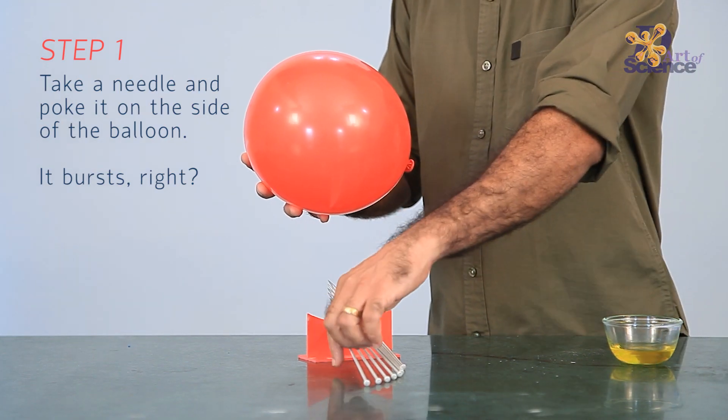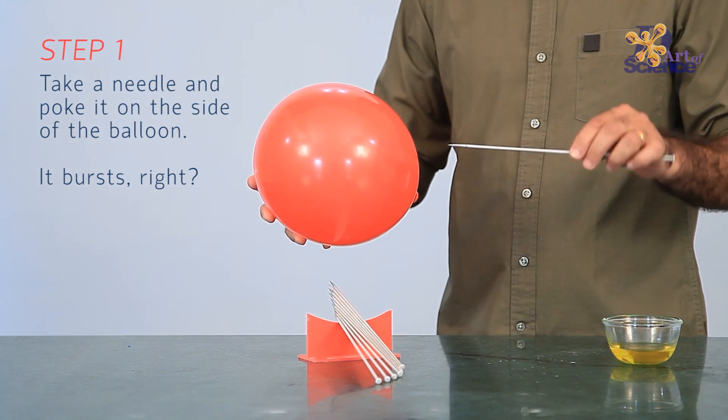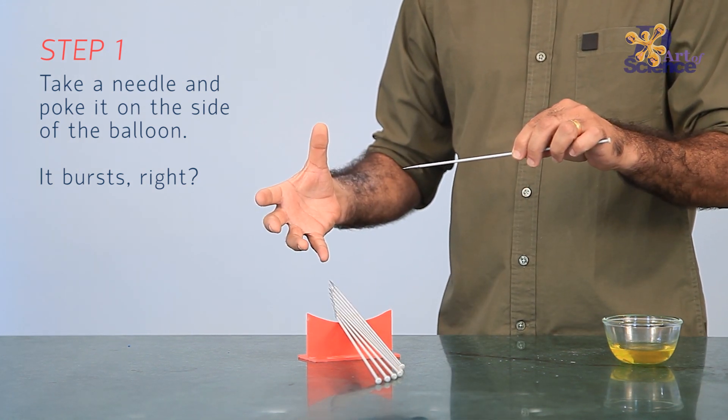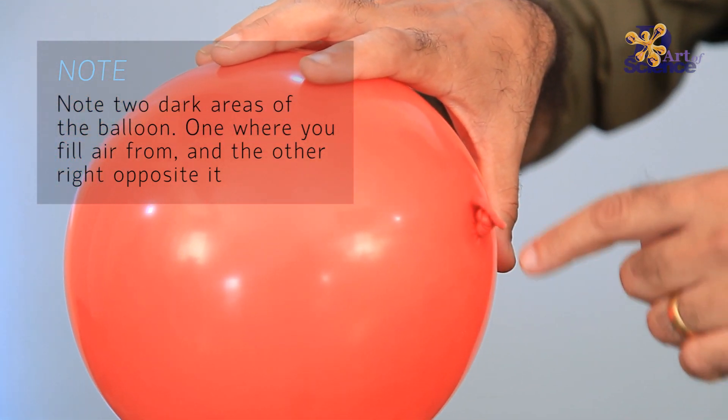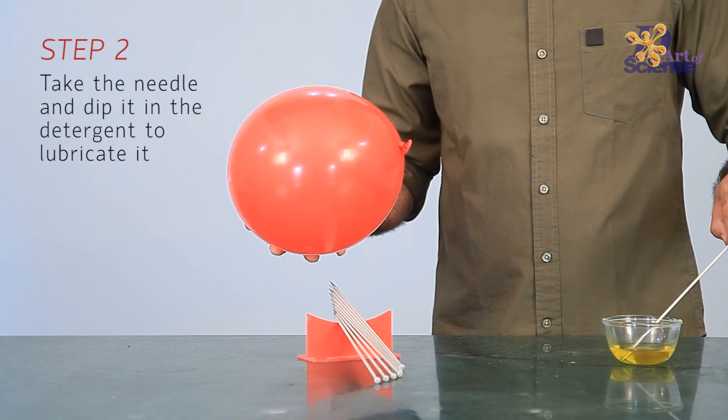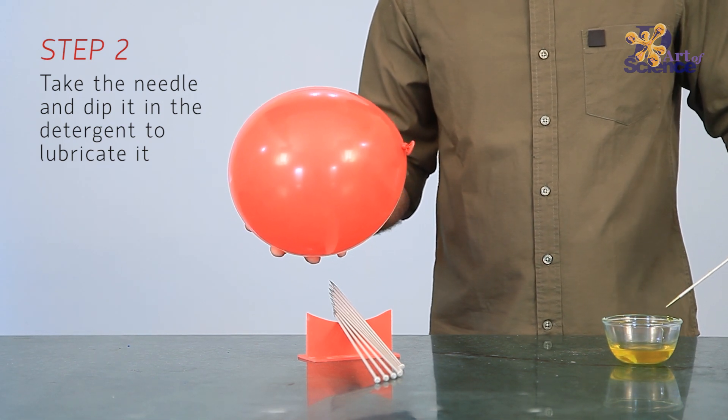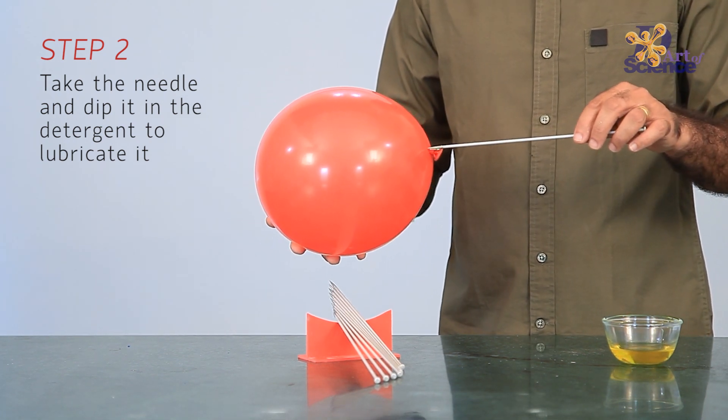For this, you need to understand about balloons. Balloons are made of a special kind of rubber called latex, which is made of long chains of molecules. If the skewer is coated with oil or soap, it helps it slide in more easily and also seals the hole.